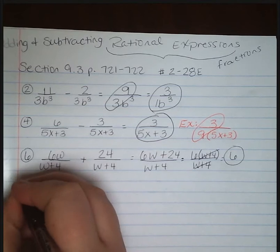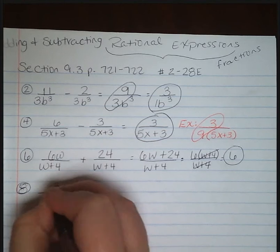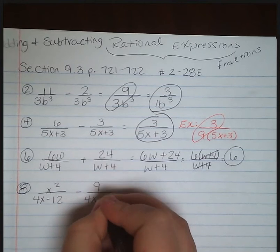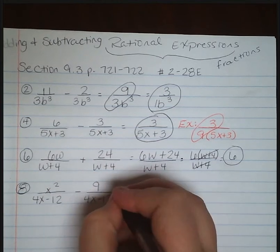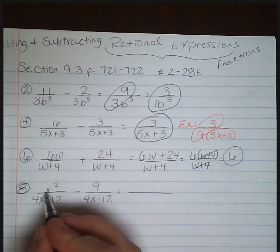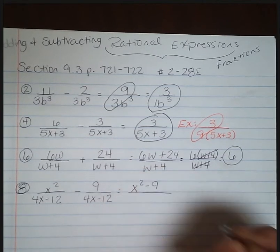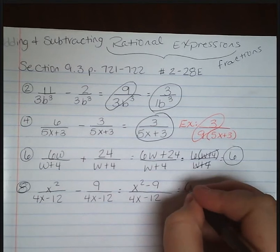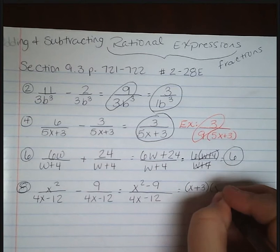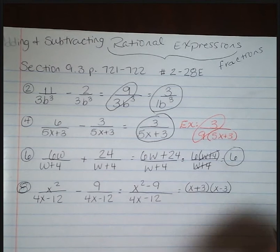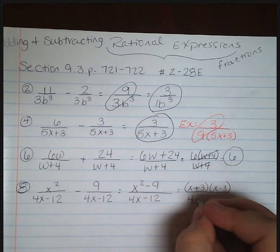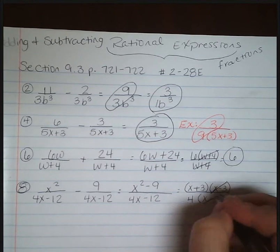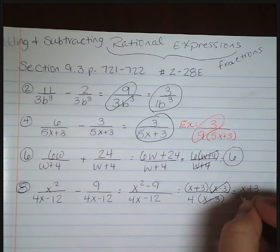Now let's move on to problem number 8. We have x squared over 4x minus 12 minus 9 over 4x minus 12. We have a common denominator, so we combine our numerators. Since they are not like terms, we write them side by side. Now we can factor: our numerator is a difference of squares, giving us x plus 3 times x minus 3. Our denominator has a greatest common factor of 4, so we pull out that 4, leaving x minus 3. The x minus 3s cancel, leaving us with x plus 3 over 4.